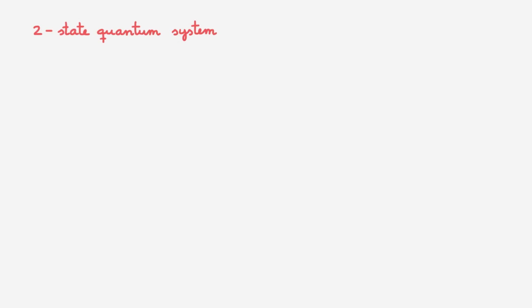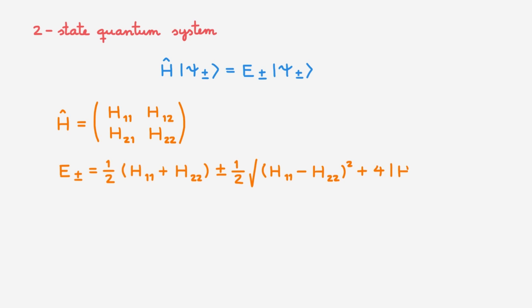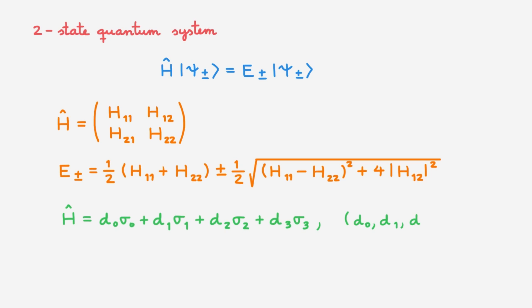Let's summarise our discussion of a two-state quantum system. We've been working with the Hamiltonian H and considered its eigenvalue equation. We've looked at two options. First, the Hamiltonian can be explicitly written in terms of its matrix elements, and we've found that in this notation the eigenvalues are given by one-half times (h11 plus h22) plus or minus one-half times the square root of (h11 minus h22) squared plus 4 times the absolute value of h12 squared. Alternatively, we can rewrite the Hamiltonian in the basis spanned by the identity and Pauli matrices, where the d parameters are real. In this form, the eigenvalues are given by d0 plus or minus the magnitude of d. You can use either form and will often find yourself using both depending on the context.